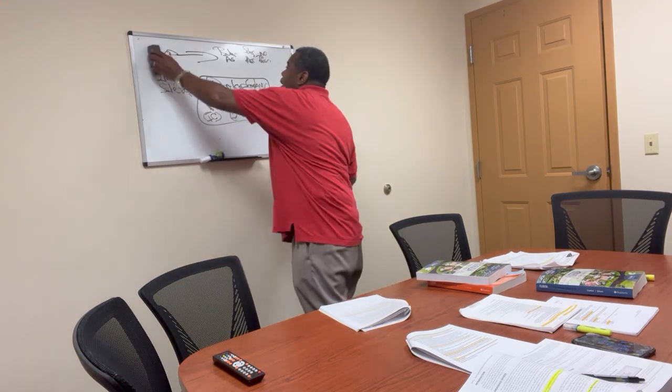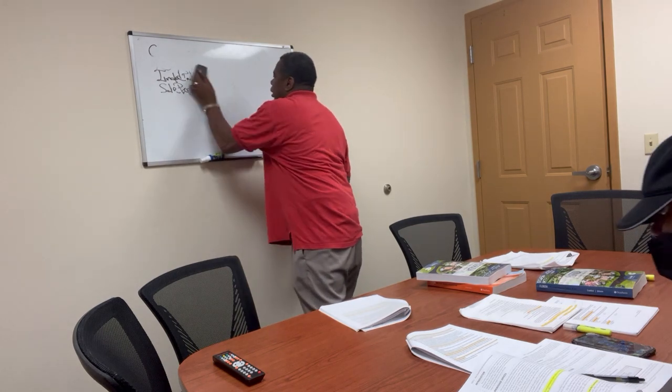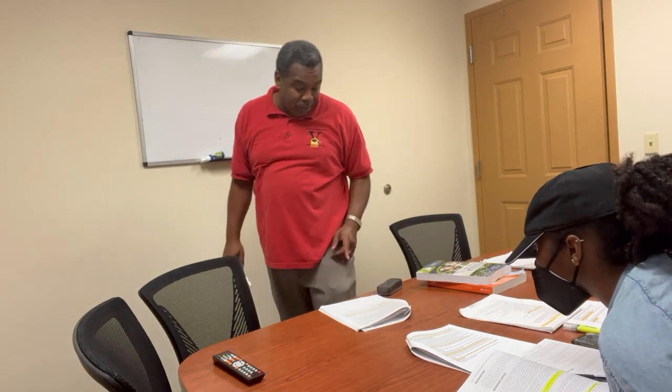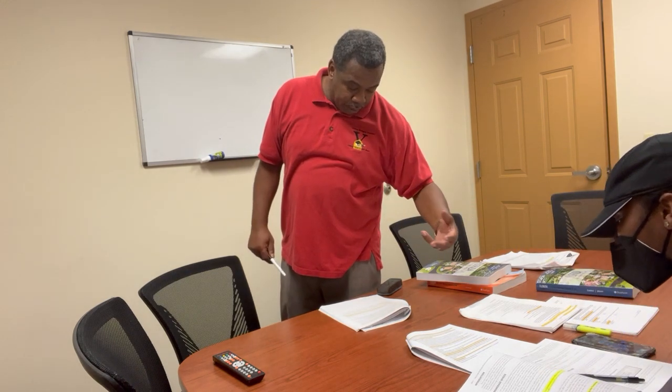An ostensible or quasi-partnership is created when the actions of two or more persons create the appearance of a partnership. Licensees who operate as ostensible partners may be subject to license suspension. Basically, it's a partnership that's not really a partnership — if two people work together, advertise together, and share office space, the general public would presume they're partners, but there's no documentation of such. So it's a quasi-partnership, and it's illegal.